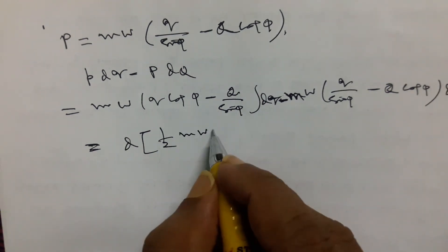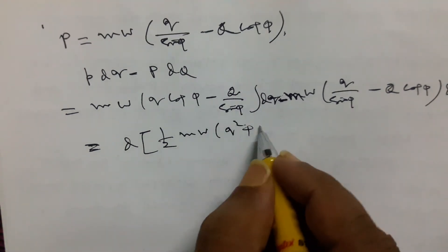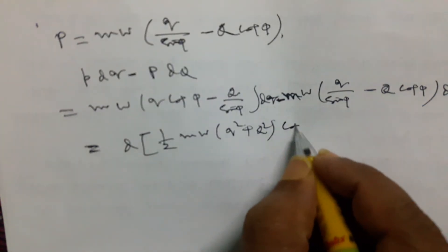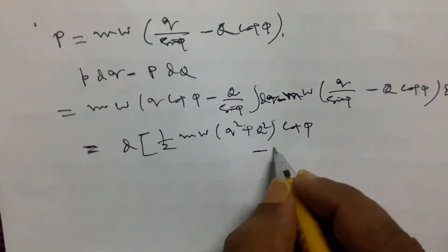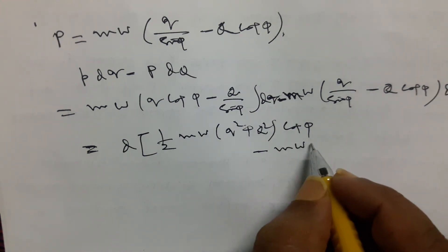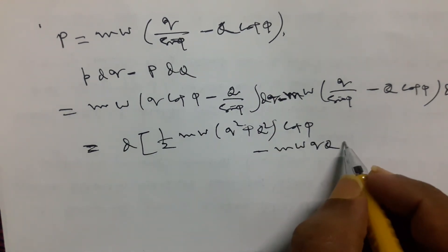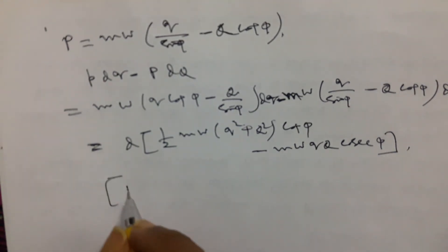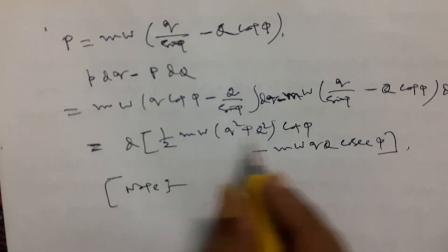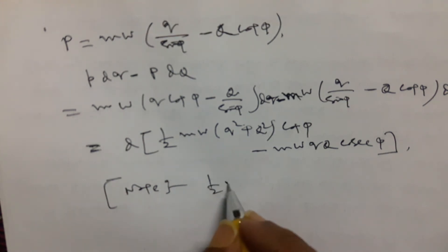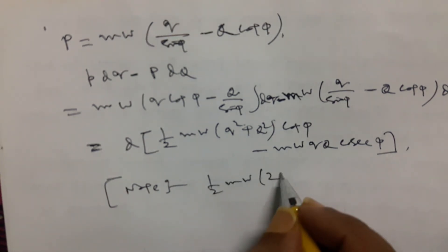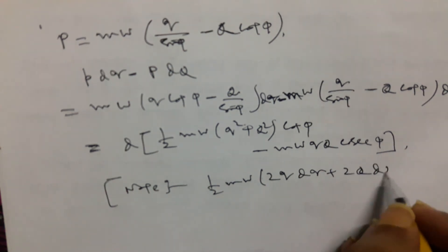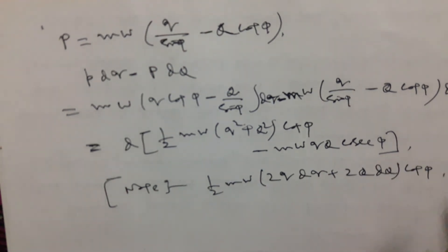The expression becomes mω (q² + Q²) cot φ minus mω q Q cosec φ. Taking the differential, this gives 2q dq plus 2Q dQ times cot φ, which corresponds to the exact differential of that grouped expression.